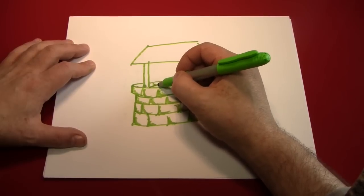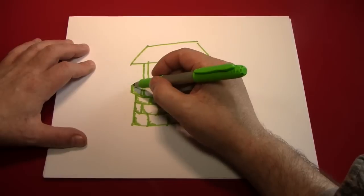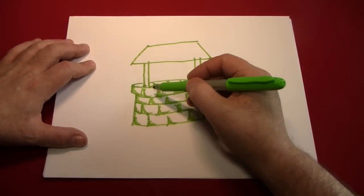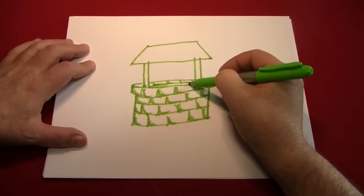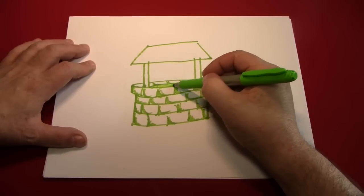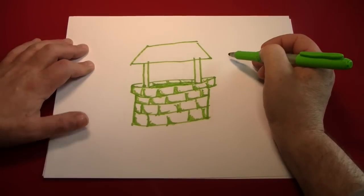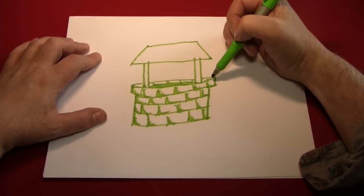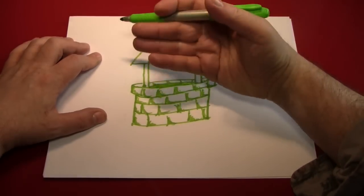And what's going to pull off this illusion is coloring in the hole. Hopefully your pen has more ink in it than mine does as this seems to be not as dark as I want it to be. So once you've filled in the hole right there, you give the illusion of there being a well.